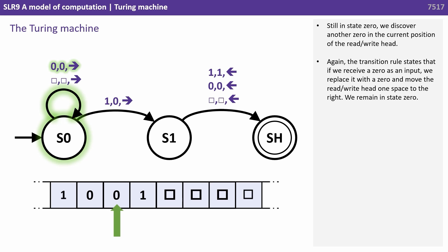Still in state 0 we discover another 0 in the current position of the read-write head. The transition rule states that if we receive a 0 as input, we replace it with a 0, and move the read-write head one space to the right. We remain in state 0.